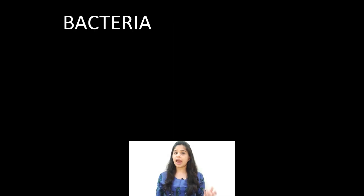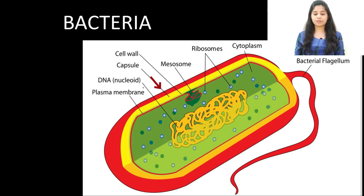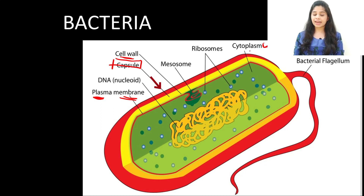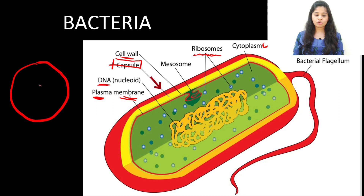Let's discuss bacterial structure. This cross section of a bacterial cell mainly consists of an outer capsule, also termed the slime layer. Underneath is the cell wall and plasma membrane, also called the cell membrane. Beneath the cell membrane we have the cytoplasm, which harbors free-floating ribosomes. A very peculiar aspect is the presence of DNA that is not inside a nucleus.